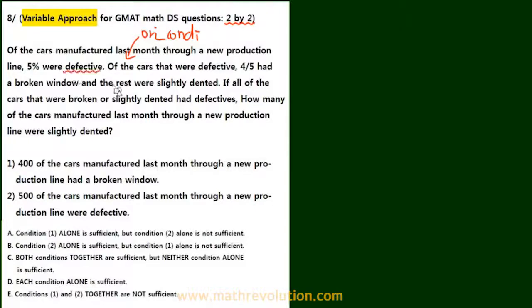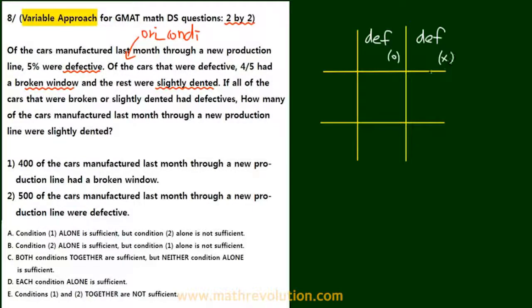With 2 by 2, we have defective and broken window slightly dented. We represent the 2 by 2 using the following table. Now with this, we fill it in using the original conditions. Here's defective, not defective, and then we have broken window, and then slightly dented.